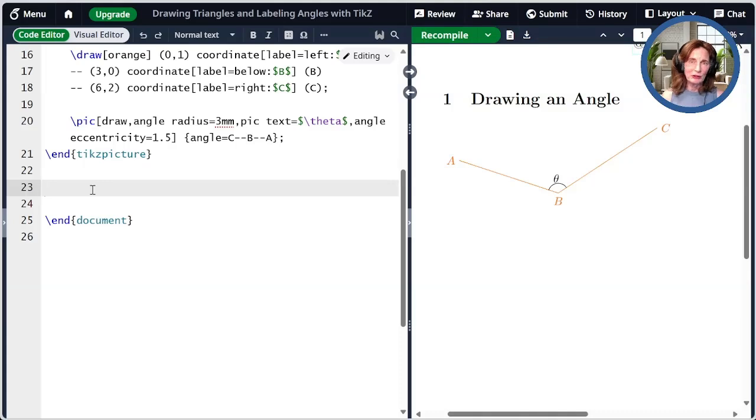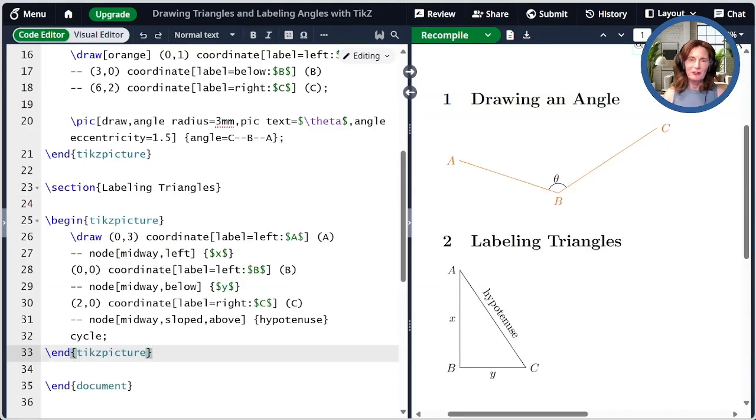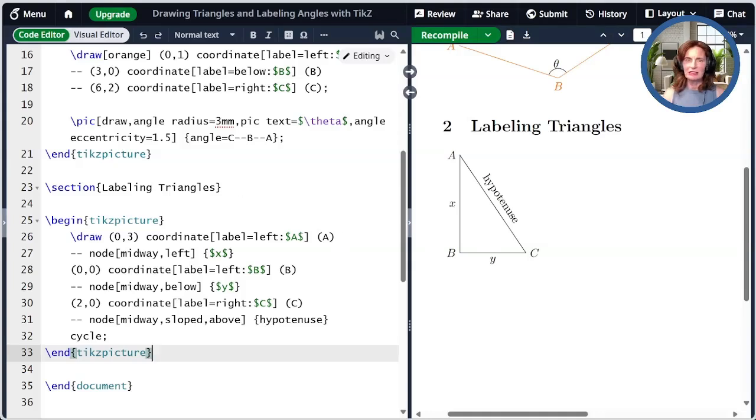Now that we know how to create an angle, let's set about labeling angles in triangles. Let me first go ahead and paste some code to draw a triangle that we can see over here. The draw command is creating the triangle with coordinates at (0,3), (0,0), and (2,0) labeled A, B, and C respectively. Observe that I've also added some labels to the sides of this triangle. I've added an X midway along the line from A to B. So here's A, here's B. I have my dash dash, and I have node midway. And then I put it to the left. Likewise, I've added a Y midway on the line between B and C. And finally, I've added the word hypotenuse midway between C and A. I'll also remind you, if you don't remember from prior episodes or you haven't watched them, that the cycle command connects back to the first point.